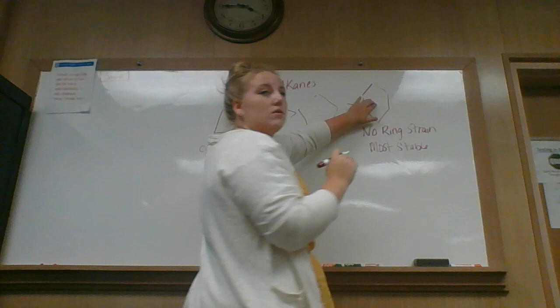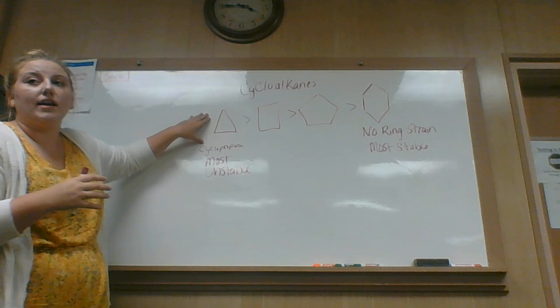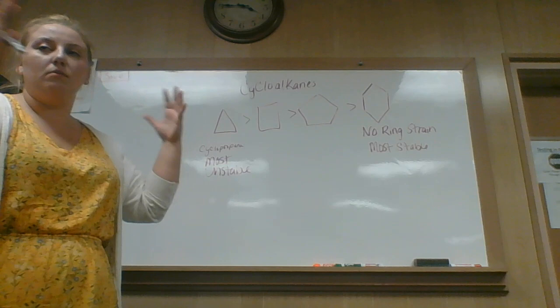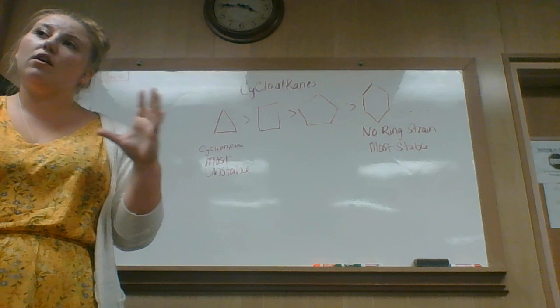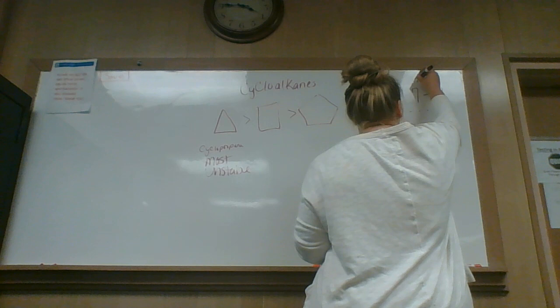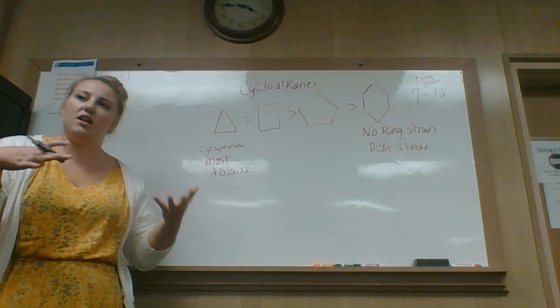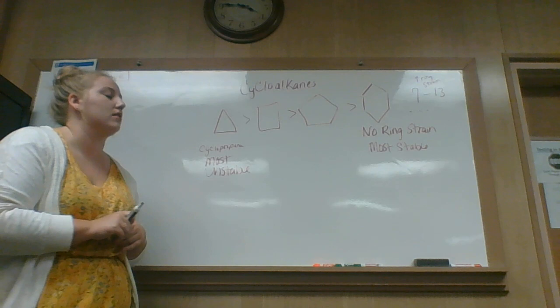Cyclohexane has no ring strain — it is the most stable. You see this one in nature a lot more than any of the others, because if something's unstable it requires a lot of energy to make it and keep it in that state. So, you won't see cyclopropane in nature very often. Once you go past cyclohexane, ring strain actually goes up again — from 7 to 13 sides, you have increased ring strain due to other types of strain. Once you get past 13, it goes back to having no ring strain — it essentially looks like a straight chain alkane and can rearrange itself.